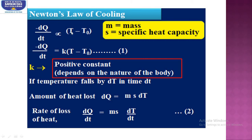Here, capital T represents the mean temperature of the body. The same equation can be rewritten as: rate of loss of heat, dQ/dt, is equal to ms·dT/dt. Here, dQ represents a small change in heat, dt represents the change in time, m is the mass, s is the specific heat capacity, and dT represents the change in temperature divided by dt, the change in time. Using these two equations, today we are going to solve the problems.